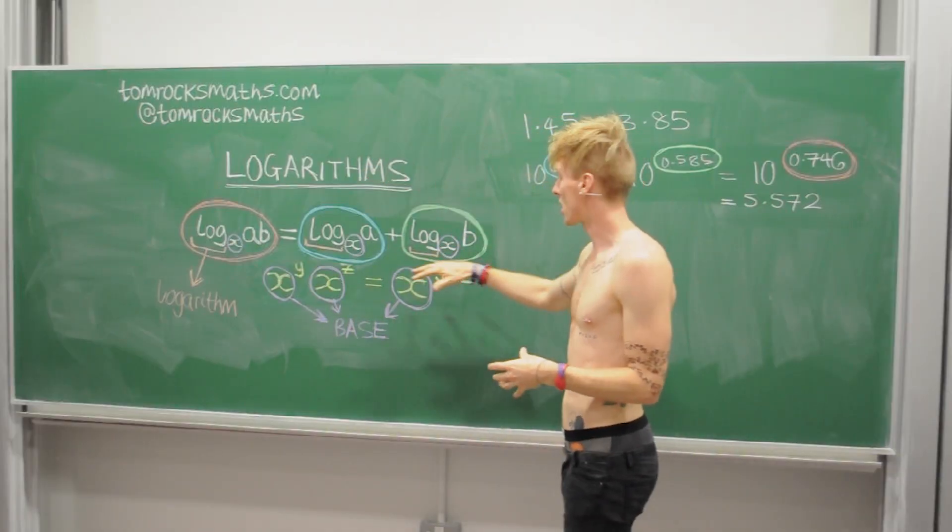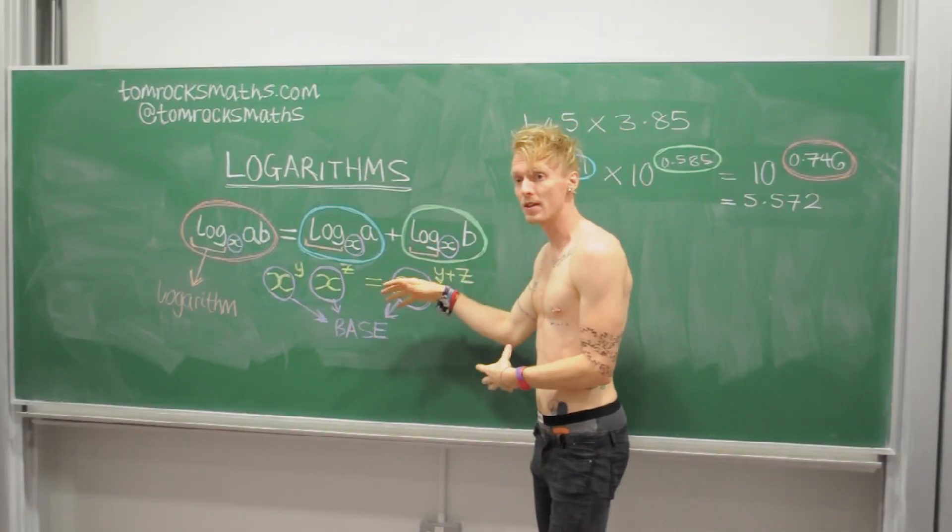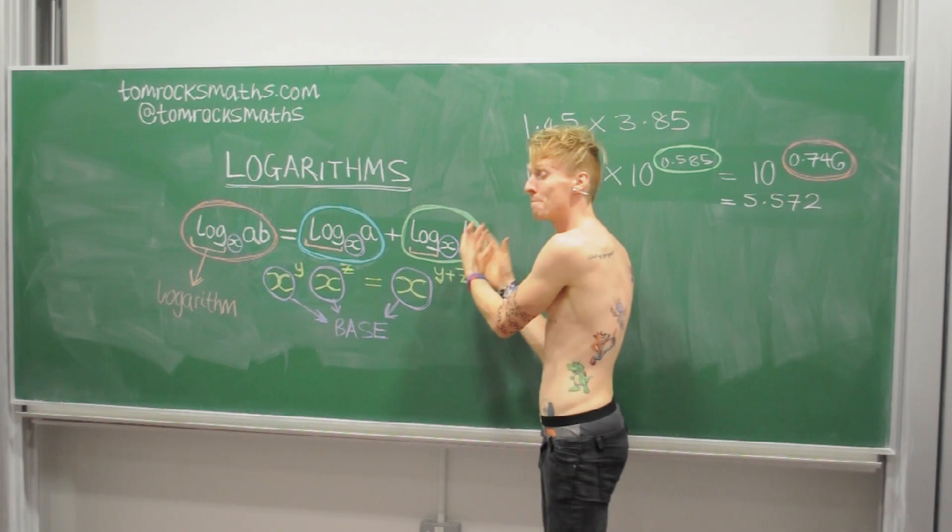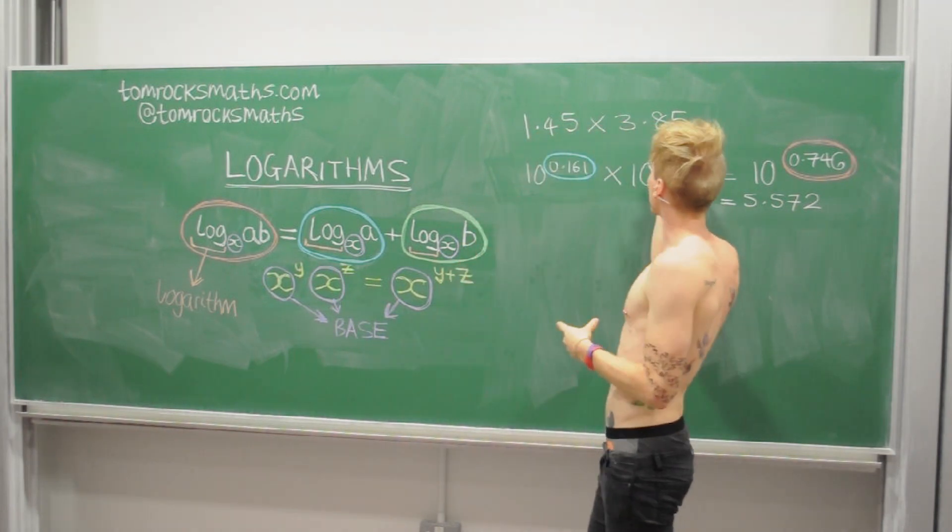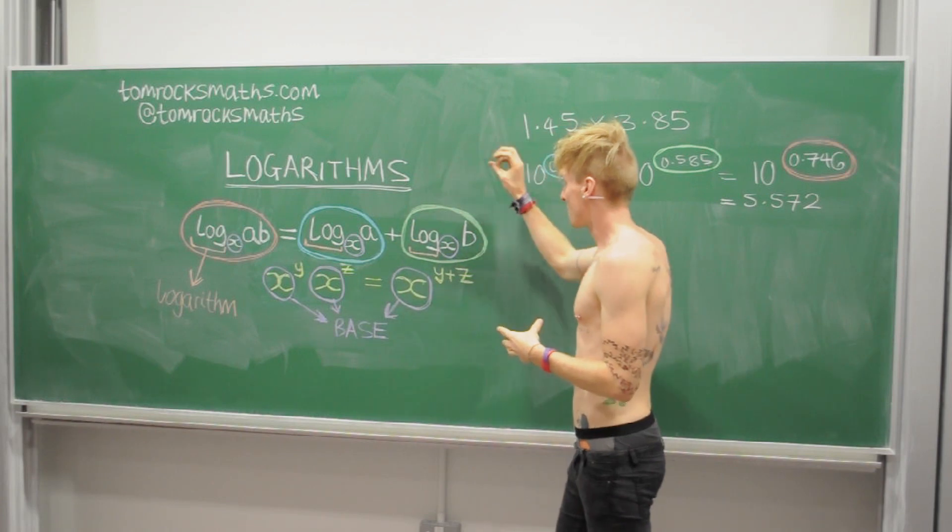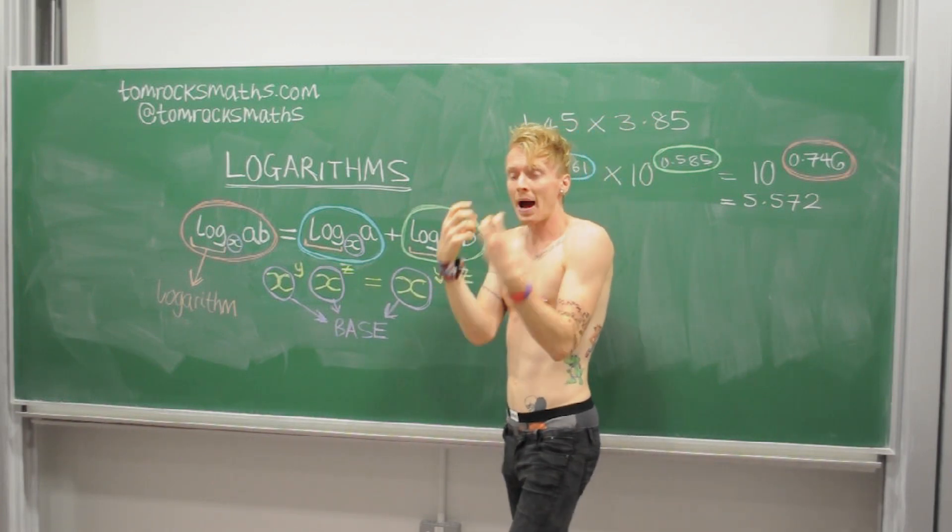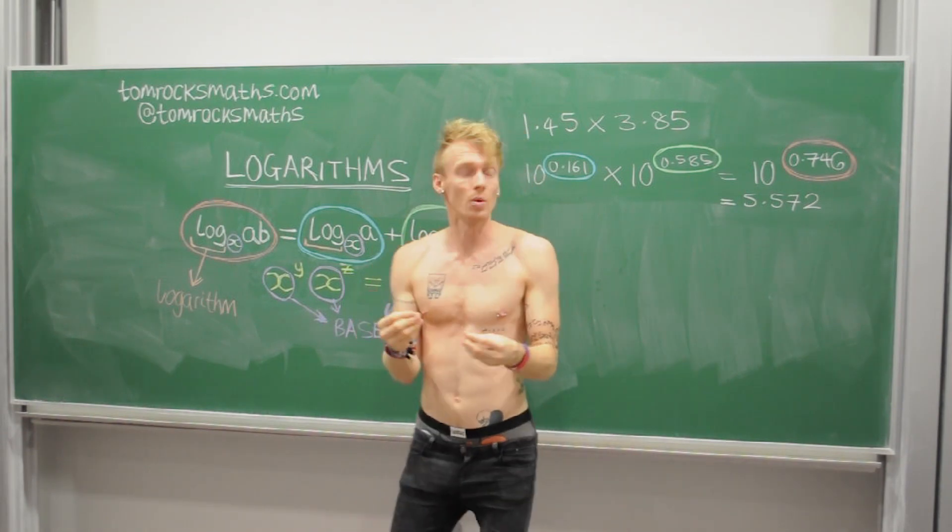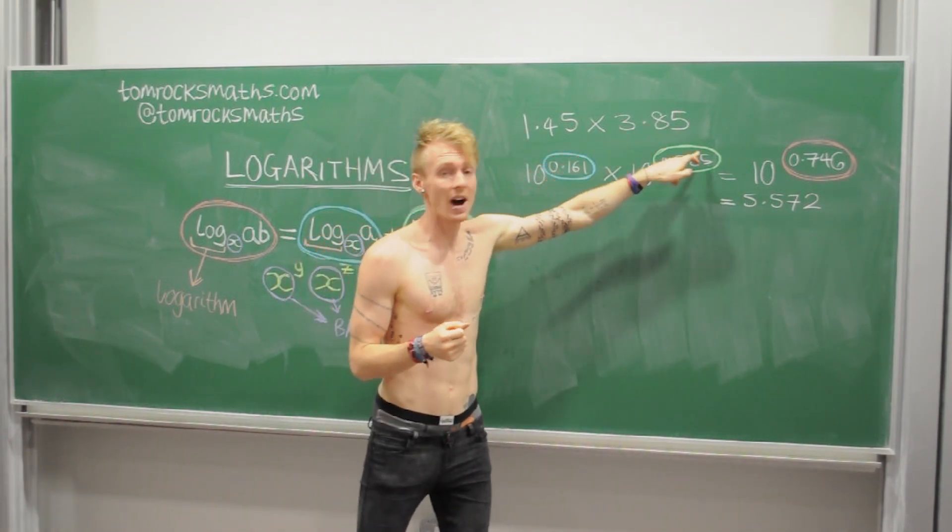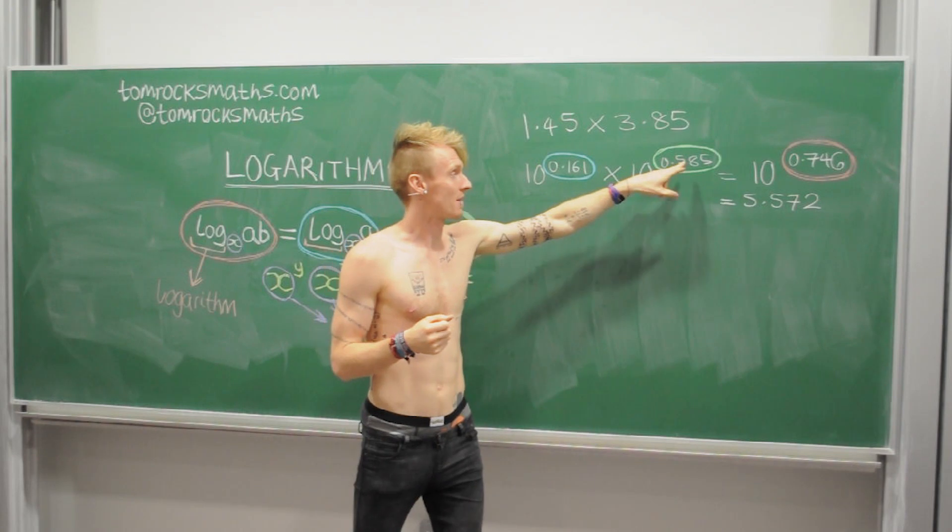Similarly, for the term in green, this is the logarithm base x of the number B. B here is 3.85. And so the logarithm base x where x is 10 of B is the power that 10 has to be raised to to get the answer 3.85. And that will be 0.585.